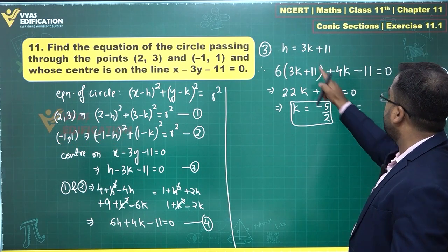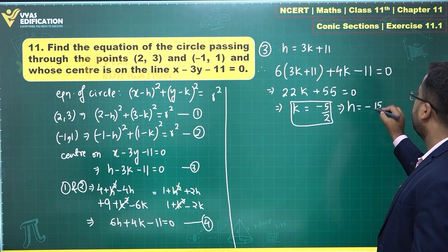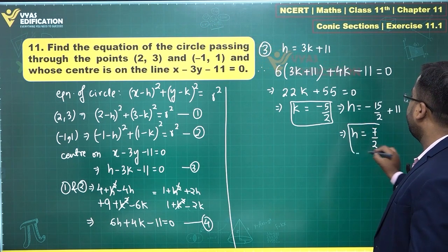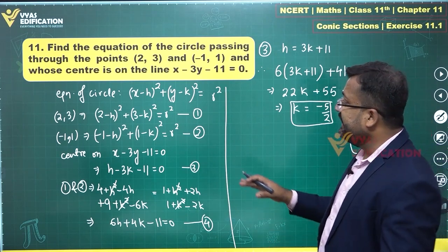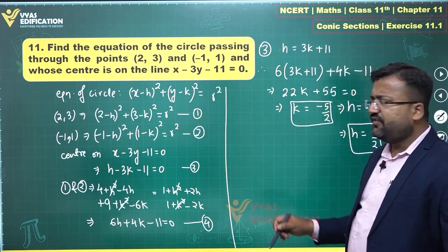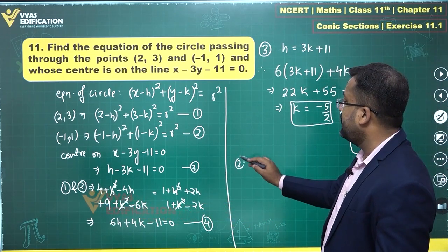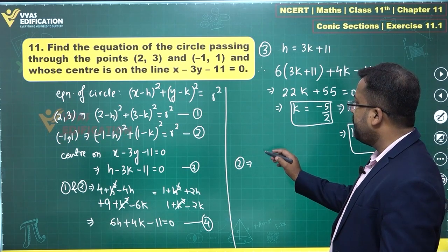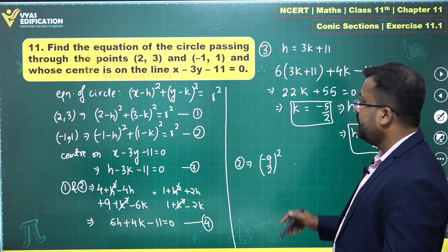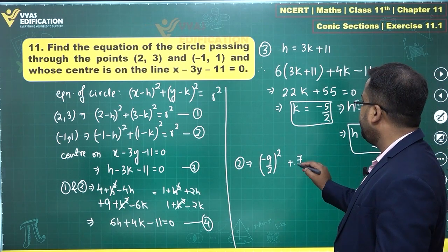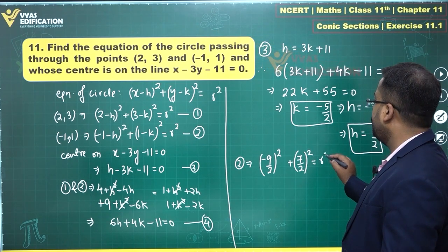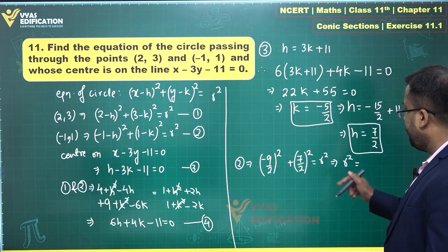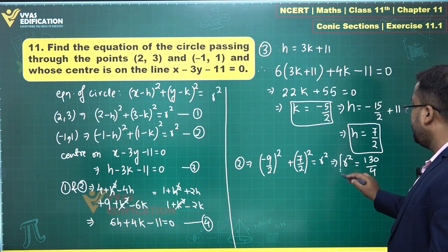h equals 3 times minus 5 by 2, which is minus 15 by 2, plus 11. That gives h equals 22 minus 15 over 2, which is 7 by 2. Now using equation 2 to find r: minus 1 minus 7 by 2 is minus 9 by 2, squared, plus 1 minus of minus 5 by 2, which is 7 by 2, squared, equals r squared. So r squared equals 81 upon 4 plus 49 upon 4, which is 130 upon 4.